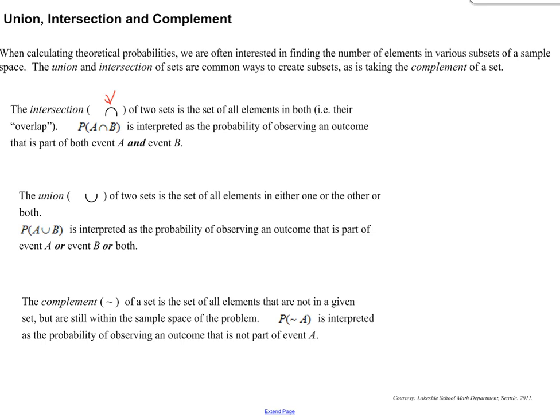So if A and B were two sets, then the probability of A intersection B is interpreted as the probability of observing an outcome that is part of both event A and event B. So if it happens in both essentially.